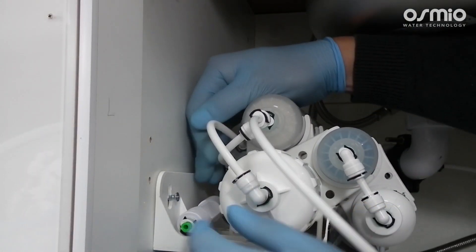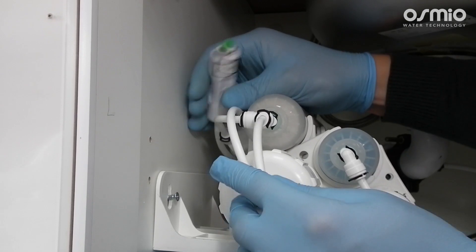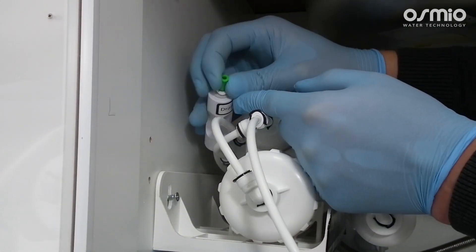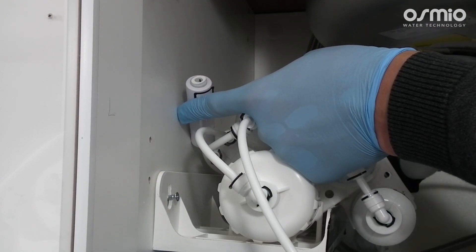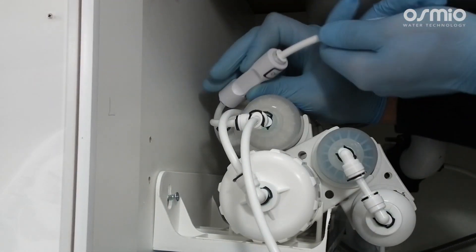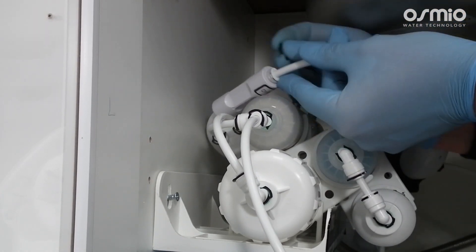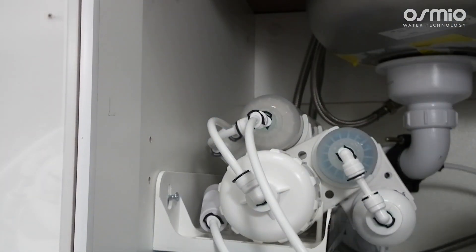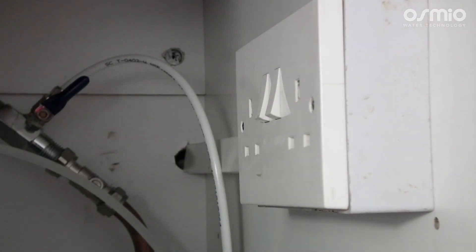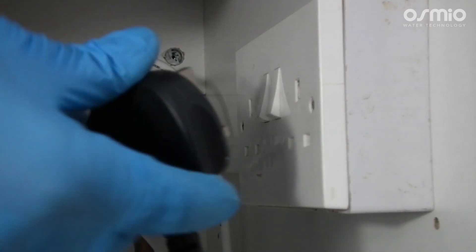The last piece of white tubing is fitted between the drain saddle on the drain pipe and the drain connection on the unit. If you have a pump version of the filter system, you can now use the power cord to plug it into a socket.